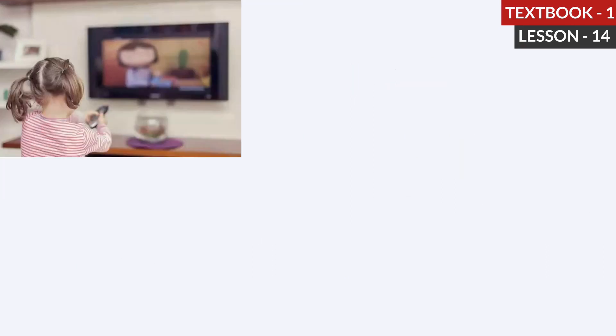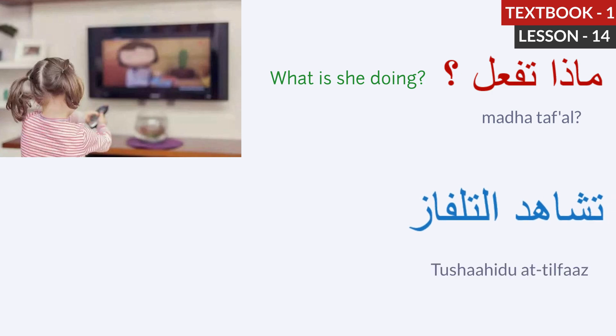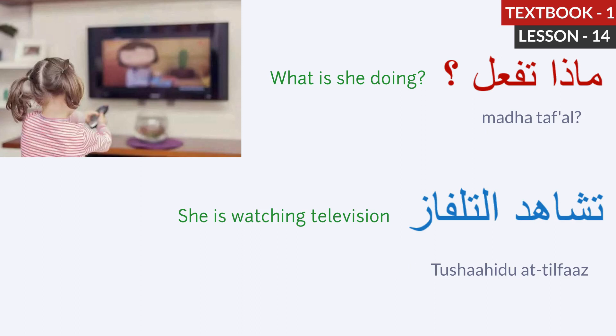The next one. Madha tafal. What is she doing? Tushahidu al-tajlisu al-bint. She is watching television. Tushahidu means she is watching. At-tajlisu al-bint means the television. Let's repeat. Madha tafal. What is she doing? Tushahidu al-bint. She is watching television.